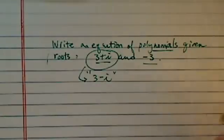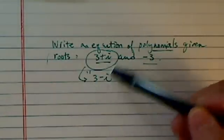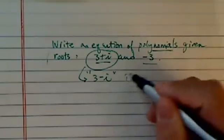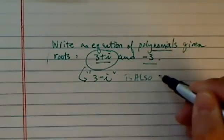That's because the conjugate roots always come in pairs. So if there's 3 plus i, then 3 minus i is also a root.